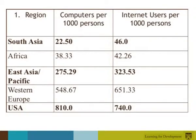The simple statistics in this table give a picture of the vast disparities among the different regions of this planet. If you look at the last line in the US, the computers for 1,000 people — there are 810 computers for 1,000 people. Look at South Asia: 22 computers for 1,000 people. If you look at internet users per 1,000 persons in the US, it's 740, as opposed to 46 in South Asia.